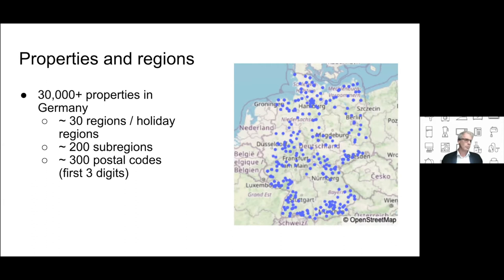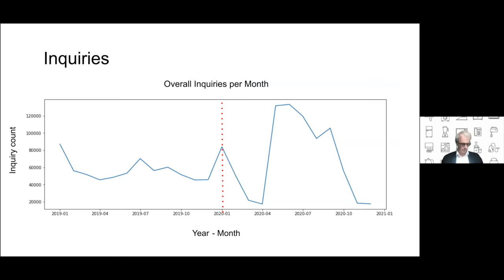There were 30,000 properties across Germany, covering 30 holiday regions, 200 sub-regions, and 300 postal codes, counting only the first three digits. Between 2019 and now, the COVID-19 pandemic significantly changed the data for 2020, with notable drops when restrictions were placed and rises when lifted. For the purposes of our presentation, we will be sticking to the 2019 dataset.